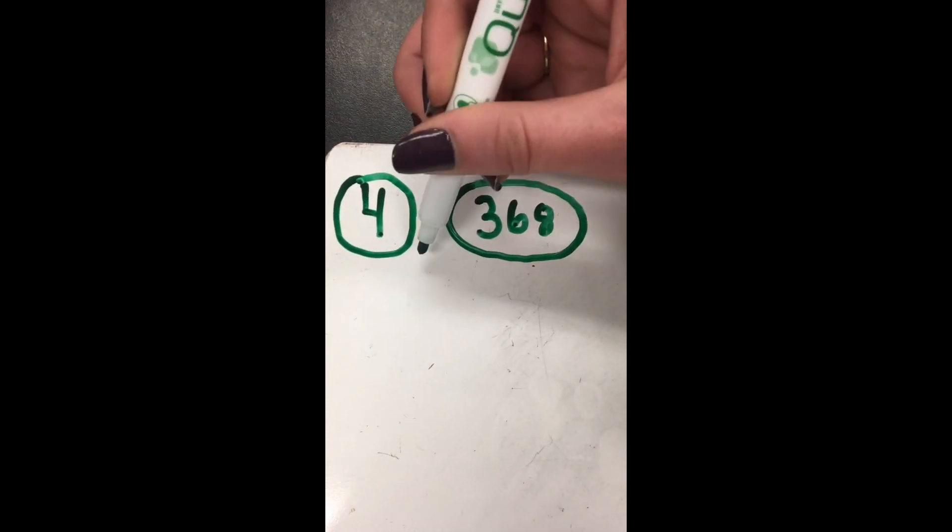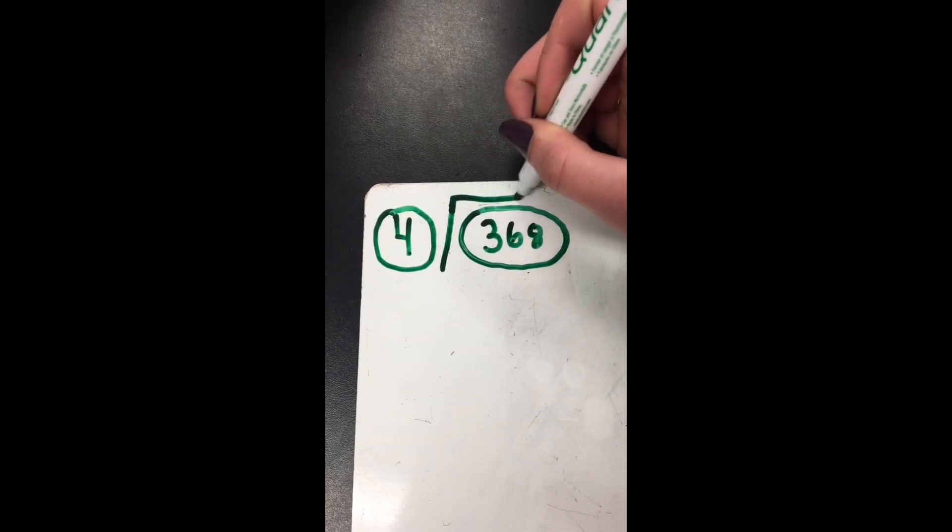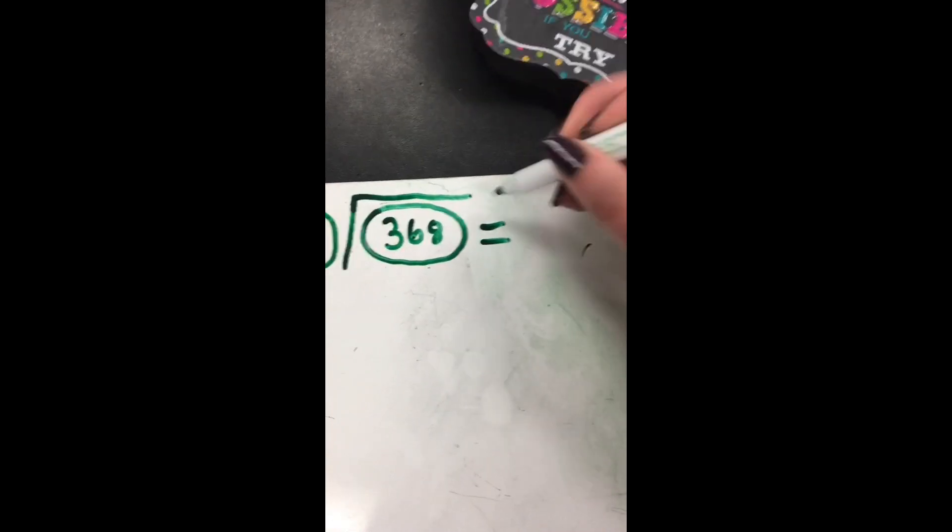The divisor is the number that does the dividing. There's a line between the two, so there's no number colliding. Attached to that, there's another line that looks quite appealing, and together they look like a roof or a ceiling.